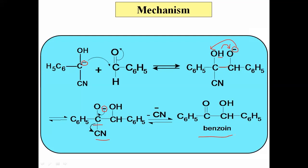We have discussed the last reaction from the topic of aldehydes and ketones. The first step is how the carbanion is formed. The carbanion attacks the second molecule — this is a nucleophilic attack. A new carbon–carbon bond is formed, the pi bond breaks, and the electron pair goes onto oxygen, which acquires a negative charge. Finally, CN⁻ is lost, restoring the carbonyl double bond, and we get the final product benzoin. This reaction is called benzoin condensation.